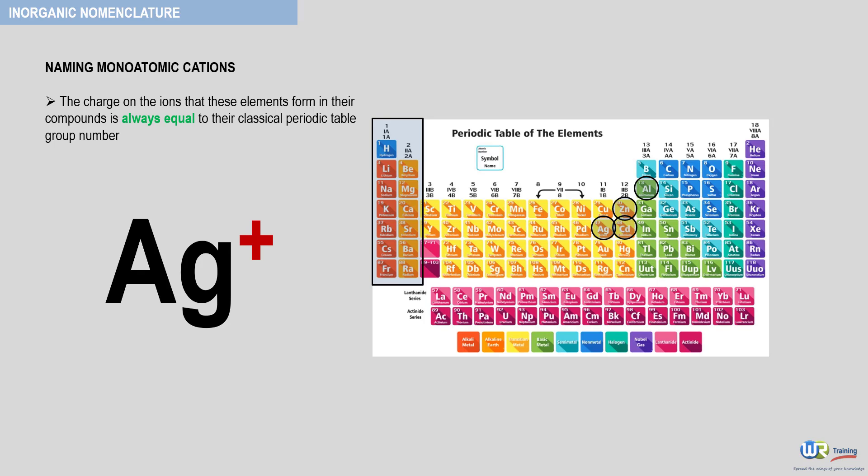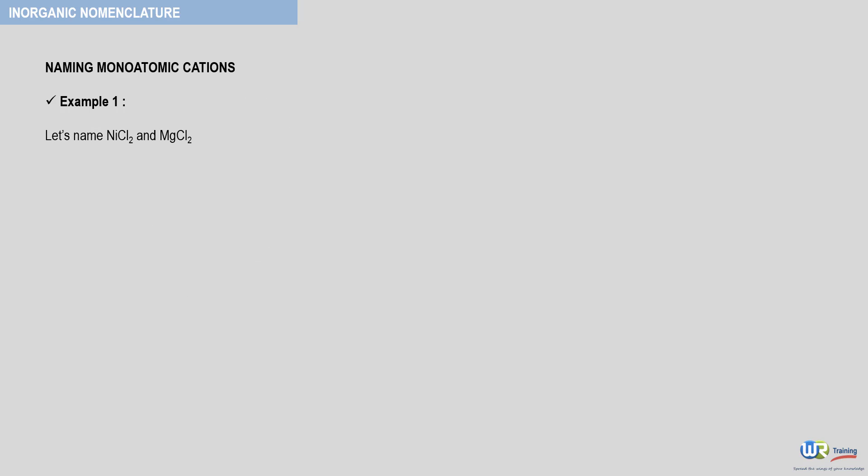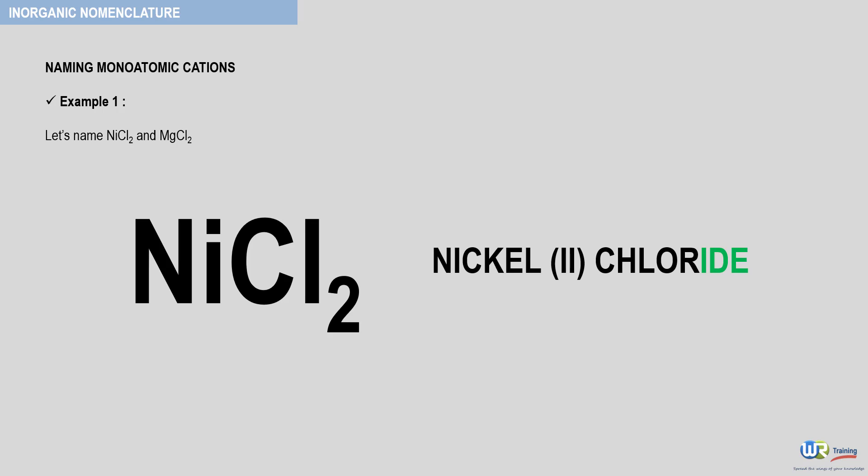Let's now see a concrete example. Let's name NiCl2 and MgCl2. Now, since nickel is not among the elements that always form ions of the same charge in all their compounds, the charge must be stated. The name for NiCl2 is nickel(II) chloride.